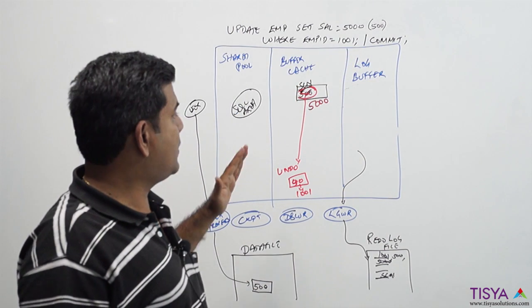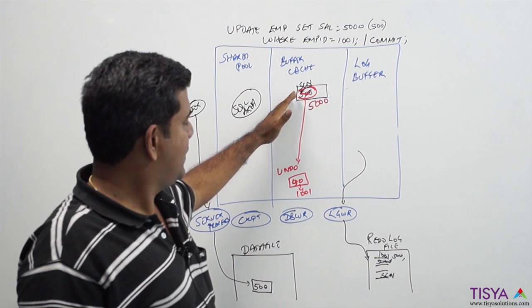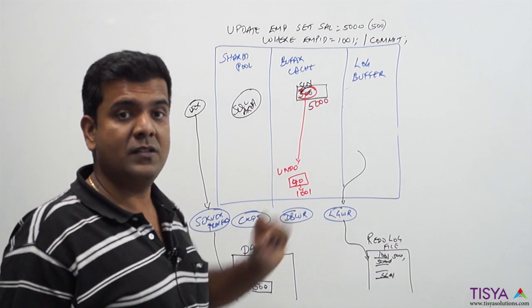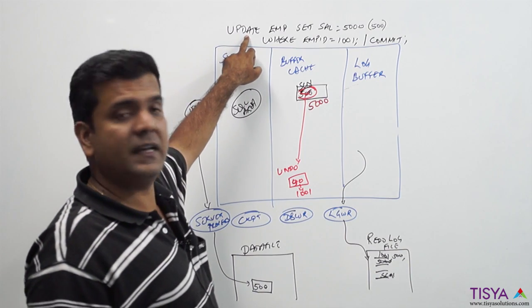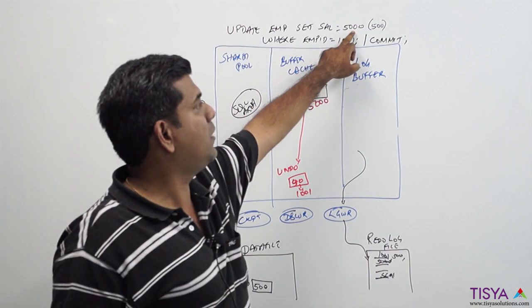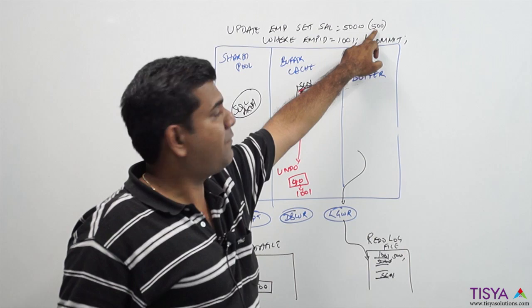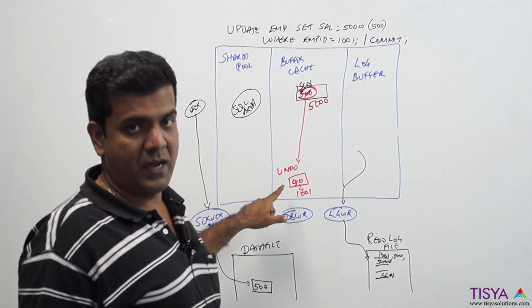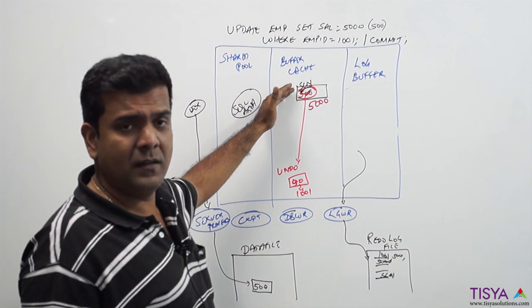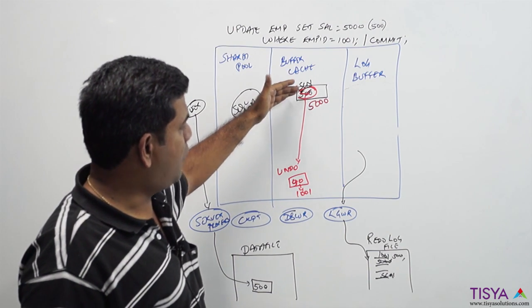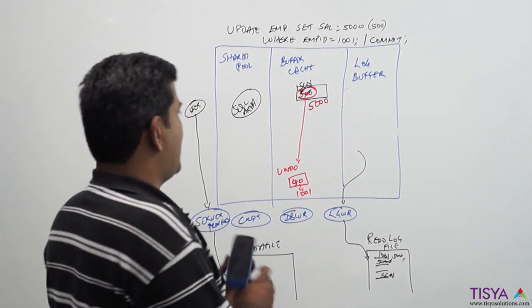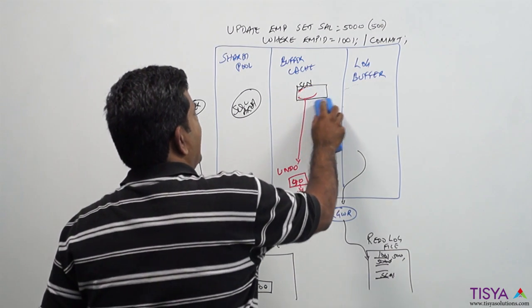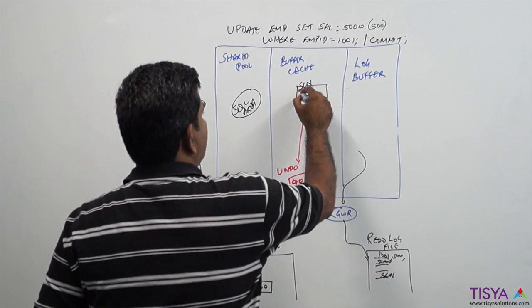Just a quick check: when this lock was maintained before the commit, if any other user performed a SELECT statement on this table, it would have fetched the old value of 500 to show it to them. Because the user who performed the update is the only one who can see the new value. Every other user will get the old value of 500 which would have been available from the undo. On commit, this value is now frozen. Now I do not need to have 500 here, we will instead have 5000.